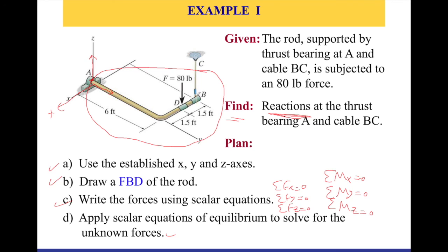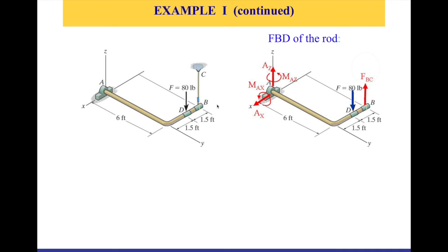The unknowns include the reactions at the thrust bearing and the cable BC. The cable will be replaced with its tension force going up. So here with the free body diagram, we've isolated the object — we don't have the cable anymore, just the reaction forces and the active force of 80 pounds. For each support reaction, we replace it with reactive forces if it prevents translation in a specific direction, and add a moment if it prevents rotation.